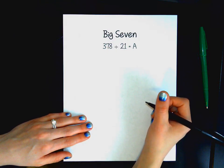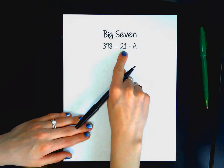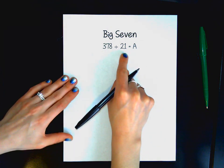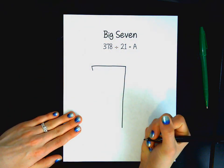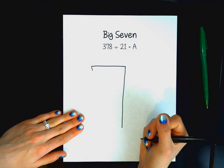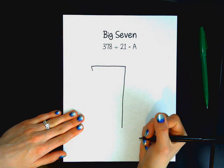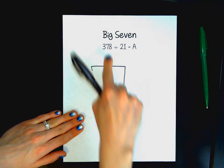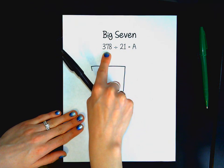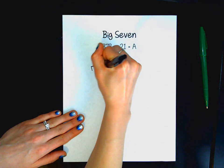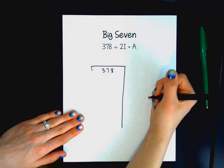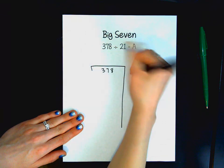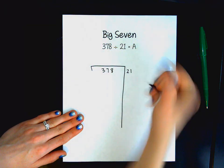So when you set up the Big Seven strategy, you're going to be taking both numbers from your division equation and putting them into our Big Seven. So this strategy is called Big Seven because you start by drawing a big seven on your page. The large number in your division equation is going to be used first and you're going to be putting that right in the inside of your seven and we are going to be putting our smaller number, which for us is 21, on the side.